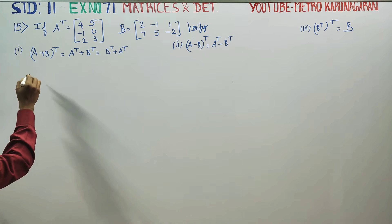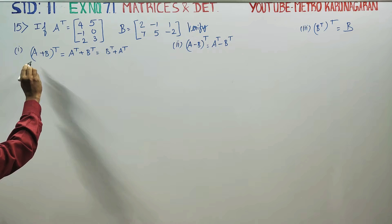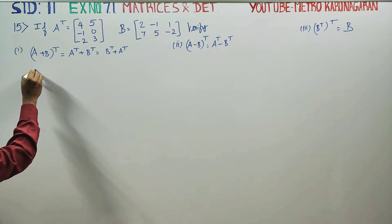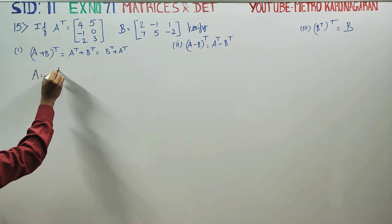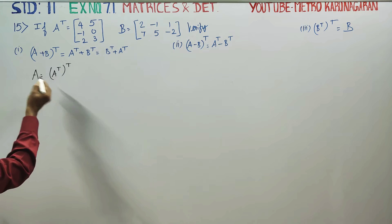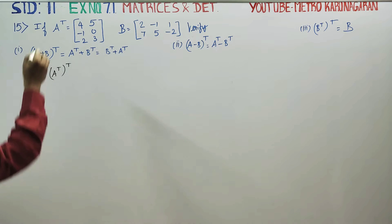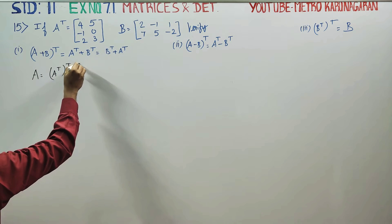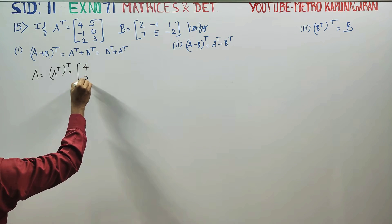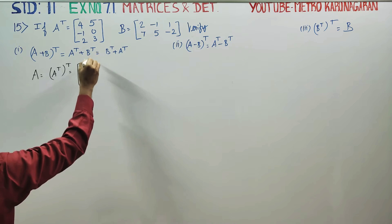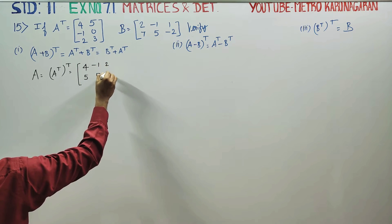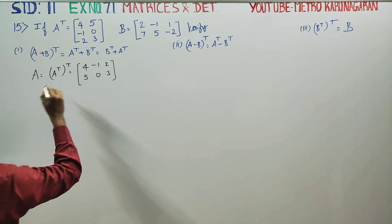First, we have to get A transpose. A transpose transpose is equal to A. So if A transpose is given as 4, 5 and 2, 3 — then this means A is the matrix with values 2, 3 in the direction. This is the A matrix.